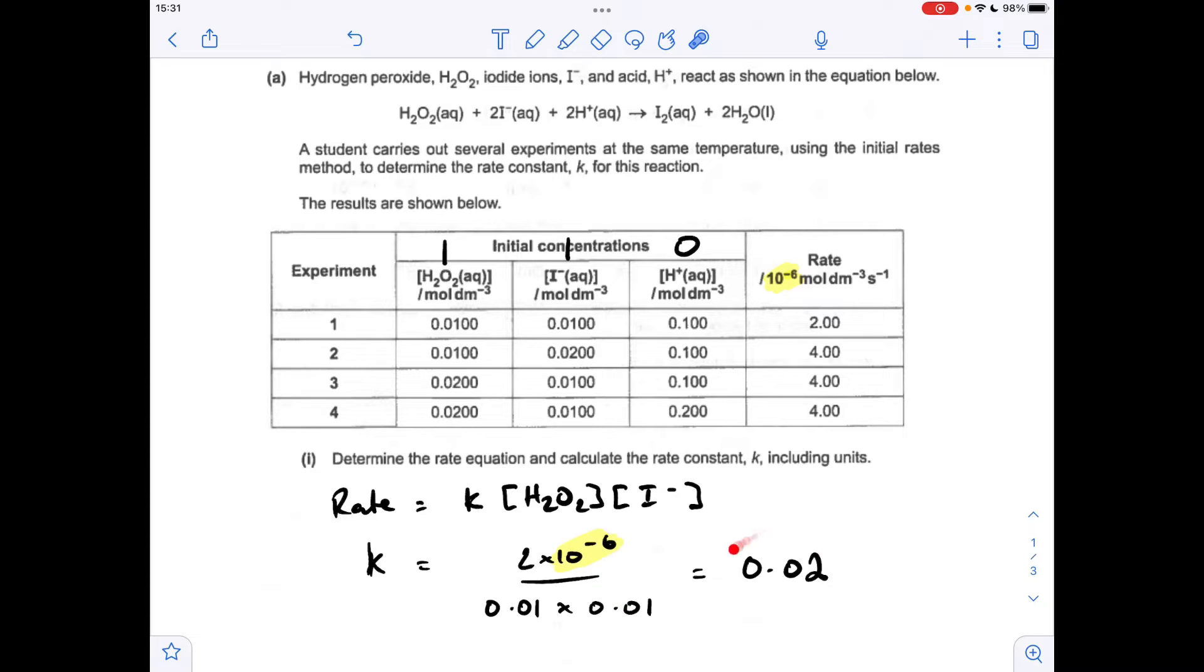The numerical value of k comes out at 0.02, and we'll do the units now. I've replaced the numbers with the units for the rate and the concentration. We can cancel out the mol dm⁻³ on the top with one on the bottom. Then bring this up to the top and flip the signs. So the units are dm³ mol⁻¹ s⁻¹.